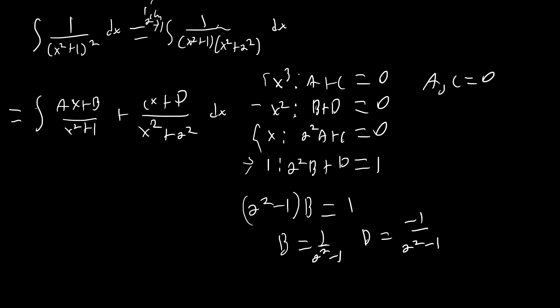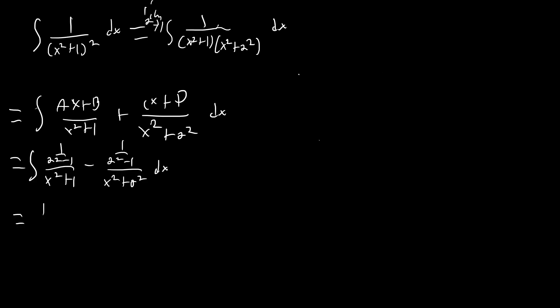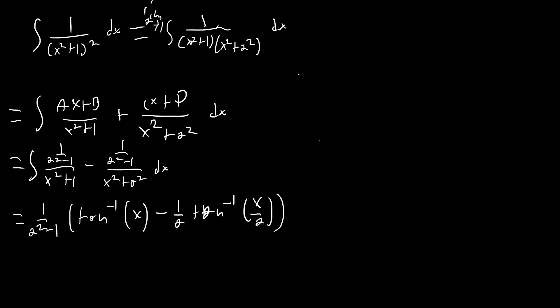Using this we can go ahead and integrate. When we integrate we're just going to end up with 1/(a² − 1) · arctan(x) minus 1/a · arctan(x/a), plus C. Now we just have to take the limit as a goes to 1. As you can see the inside just becomes arctan(x) as a → 1, and we also get 0 in the denominator because of the a² − 1 term — so we have an indeterminate form.